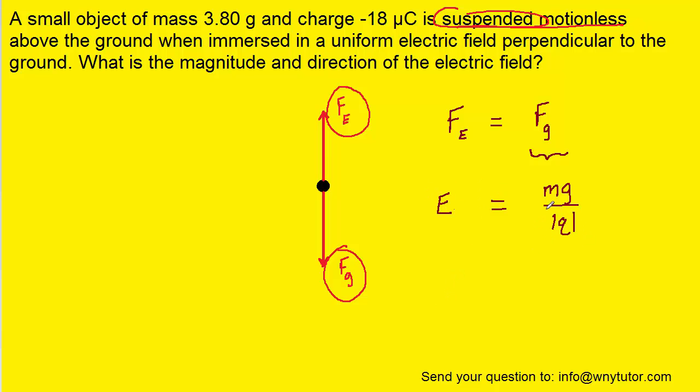And now all we have to do is plug in the known values. Notice that the mass was given in grams. We have to use kilograms, the standard unit, and so we'll have to multiply that by 10 to the minus 3. That will automatically convert it into kilograms.